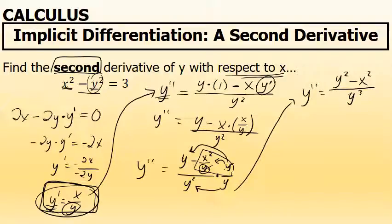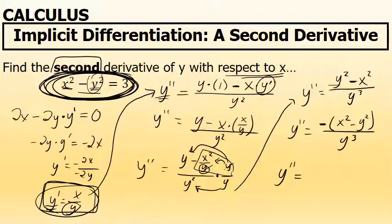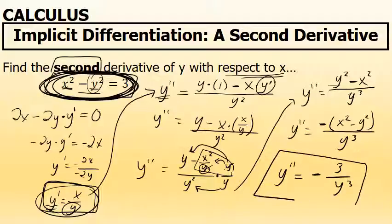Something interesting happens here: y squared minus x squared can be rewritten by factoring out a negative, giving negative times the quantity x squared minus y squared, all over y cubed. The original equation states that x squared minus y squared equals 3, so I substitute 3 for that quantity. The denominator y cubed stays unchanged, giving a very simple final form for the second derivative: negative 3 over y cubed.